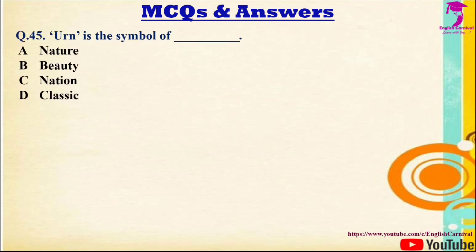Question 45: The urn is the symbol of — Options: A) Nature, B) Beauty, C) Nation, D) — Correct answer is B — Beauty. Question 46: The urn is a foster child of silence and — Options: A) Sound, B) Slow time, C) Imagination, D) Civilization. Correct answer is B — slow time.